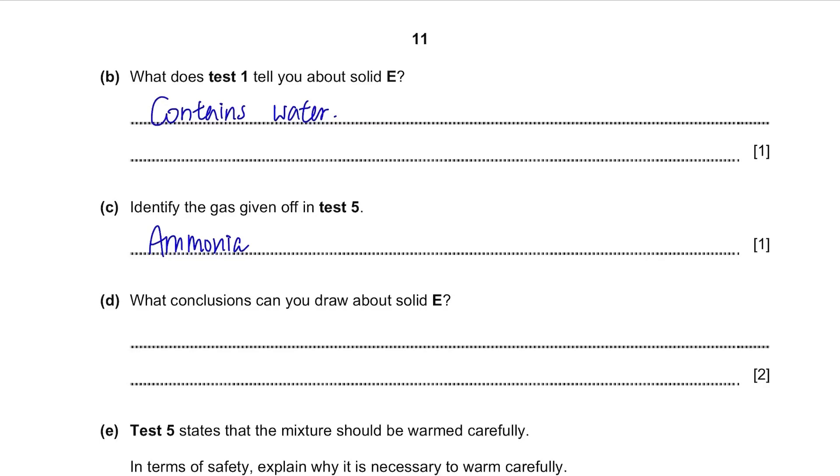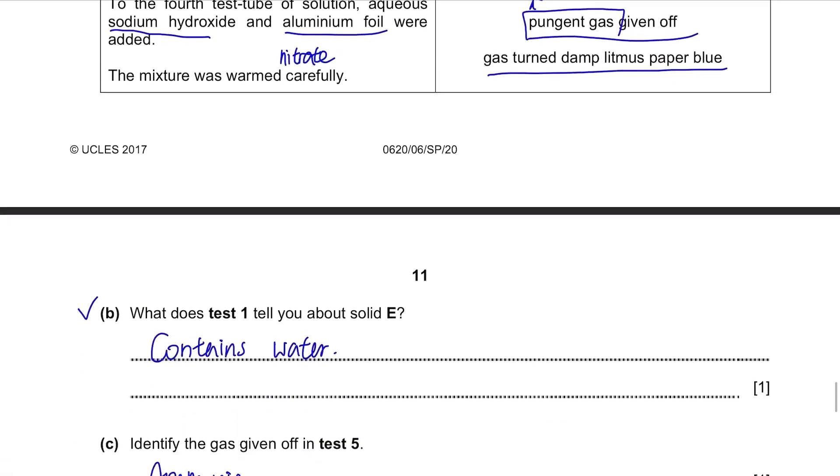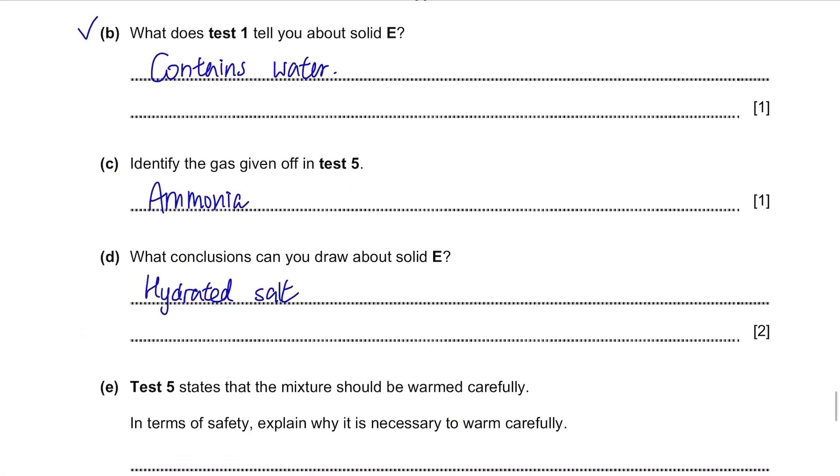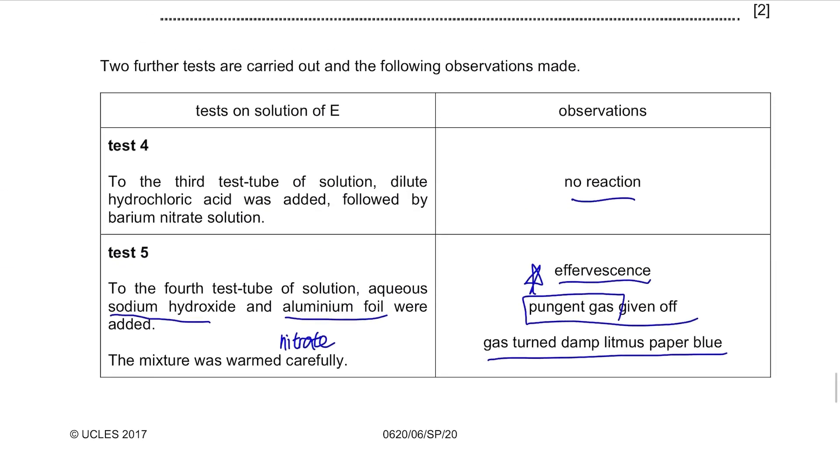Part D. What conclusions can you draw about solid E? First of all, you can say that it is a hydrated salt just like I mentioned in part B. Then from test 5, when ammonia gas is produced from adding sodium hydroxide and aluminum foil, we can conclude that it contains nitrate. Therefore, that can be our answer. You have one more option to write. From test 4, they added hydrochloric acid and barium nitrate solution. This can mean that it does not contain sulphate because if it did, then white precipitate will be formed but here, there was no reaction.